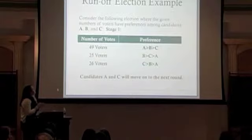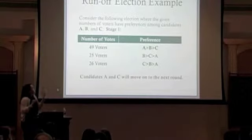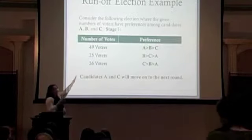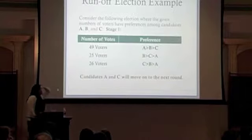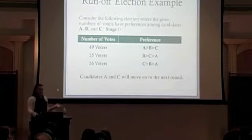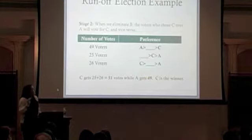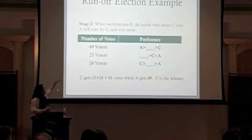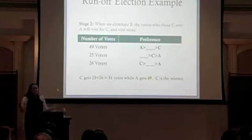Here's the classic example. In this election, we have 100 voters choosing between three candidates: A, B, and C. The chart shows that 49 voters prefer A to B to C, so in this election 49 voters pick A as their top choice, 25 pick B, and 26 choose C. Candidate A gets 49 votes and candidate C gets 26 votes, so A and C move on to the next round, eliminating B. Taking another vote with preferences staying exactly the same, candidate C beats A in 51 cases — 25 plus 26 — whereas A only beats C in 49 cases. So C would be the winner of this election.